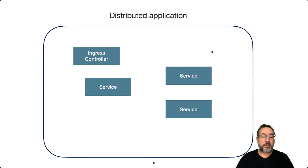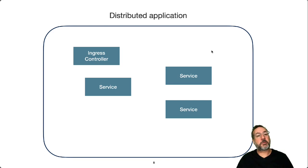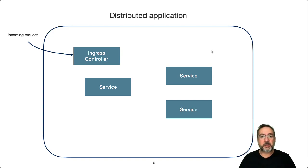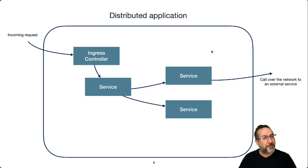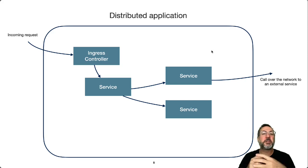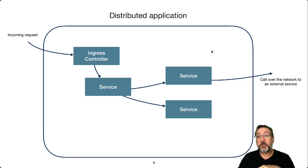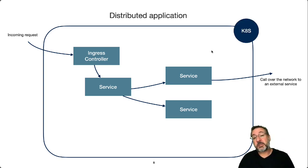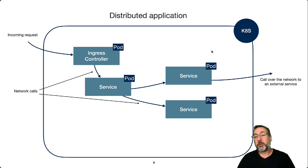In a distributed application, the flow may be laid out similarly — an incoming request handled by an ingress controller routing to a service, which enlists other services. But now each box is an independent deployable, potentially running on different VMs, on-prem, in the cloud, or in Kubernetes. If running in Kubernetes, each is a deployment with pods representing workloads. What used to be function calls are now network calls.